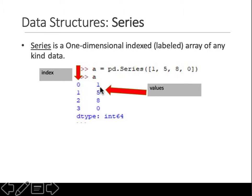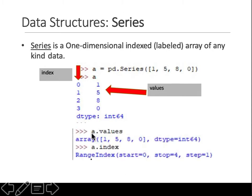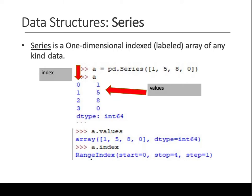These are indices and these are your values. In pandas there are functions to see both. If you want to see the values, you say series_name.values. To see the indices, series_name.index — which might show that the index starts at zero, stops at four, with a step of one, meaning from one index to the next you just add one.